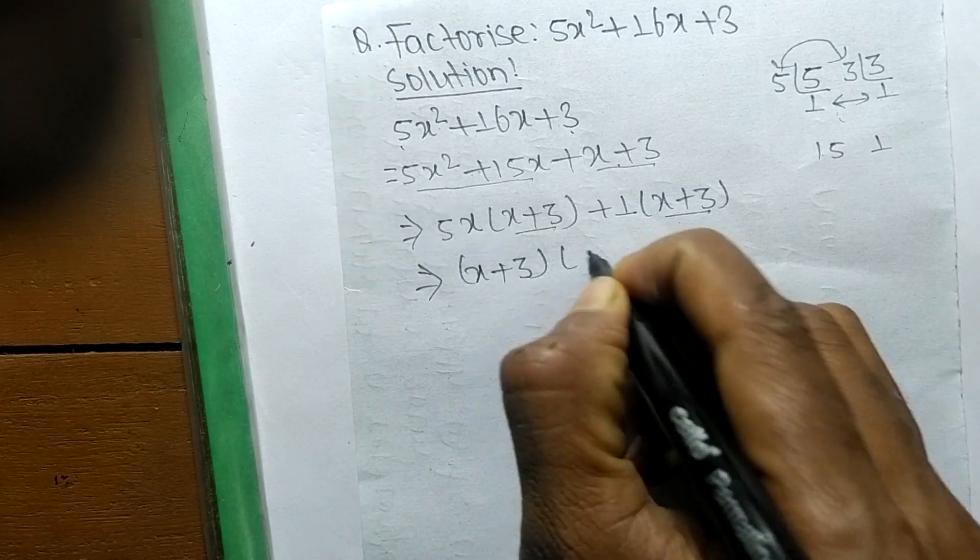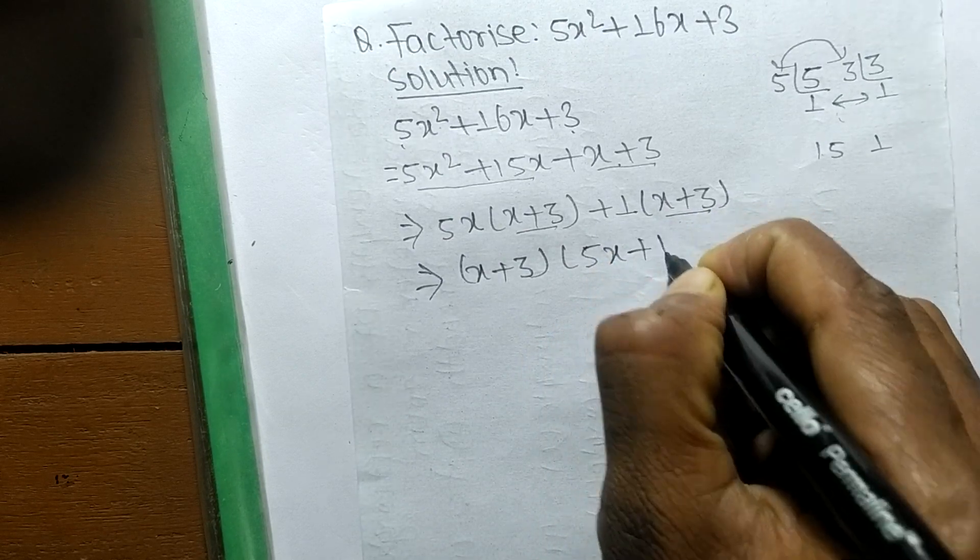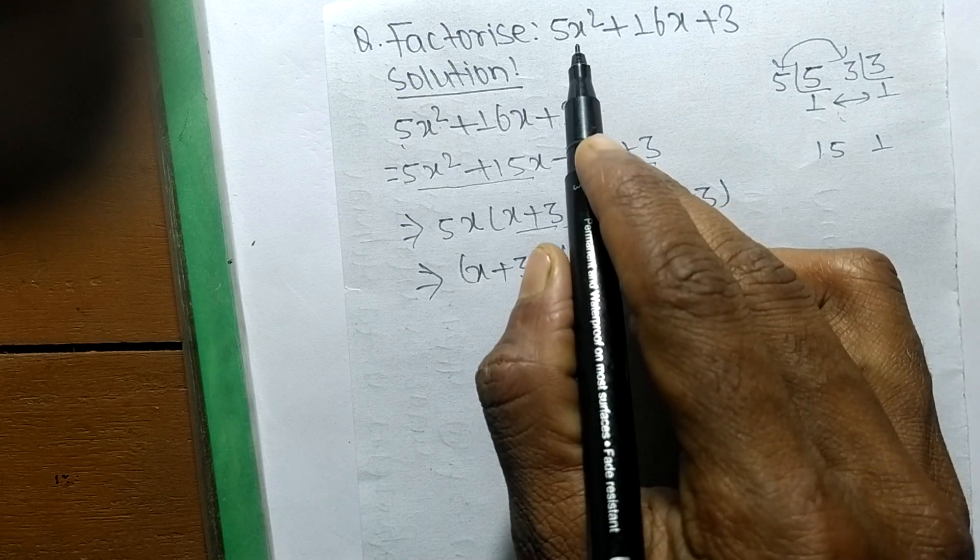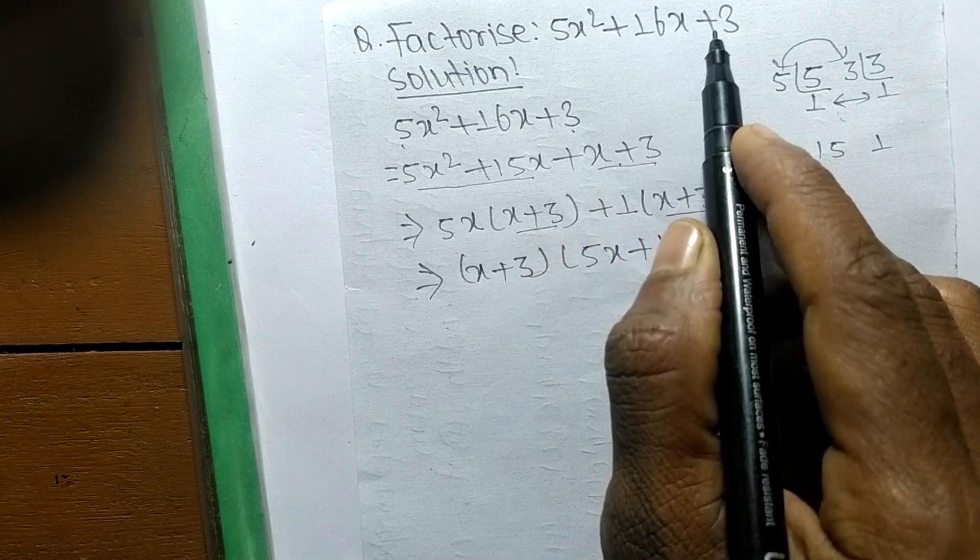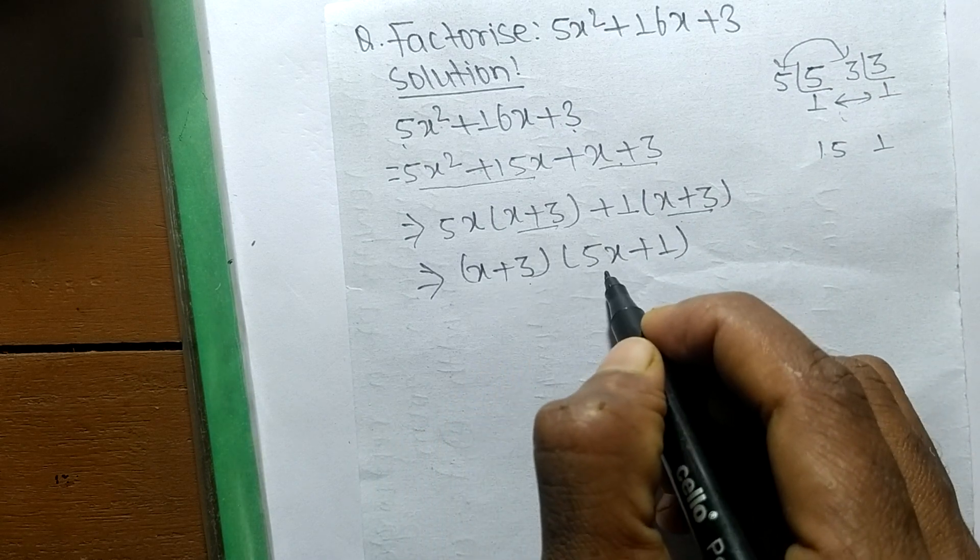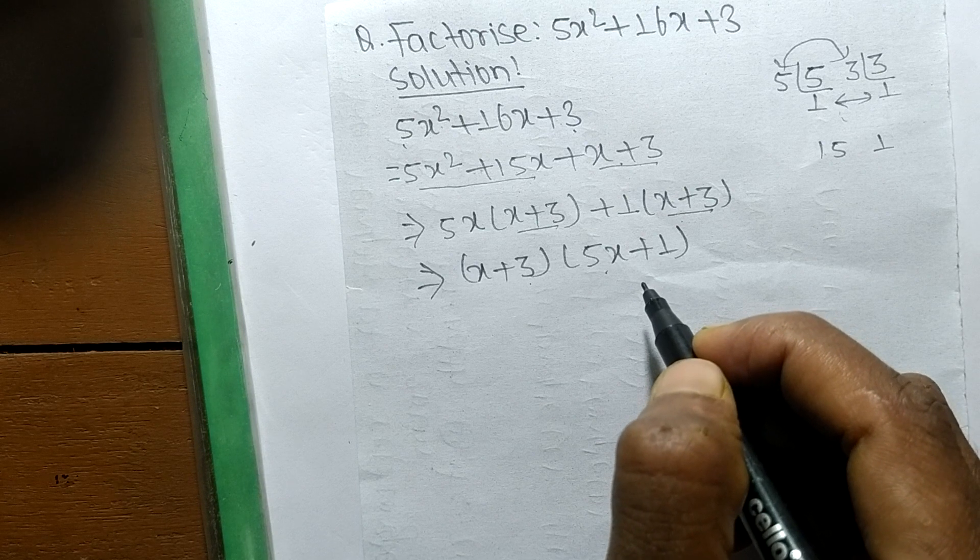The remaining in the first expression is 5x, and the remaining in the second one is +1. So the factors of 5x² + 16x + 3 is (x + 3)(5x + 1).